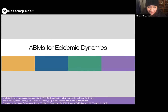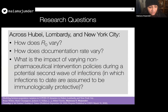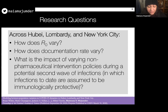Let's get started with ABMs for epidemic dynamics. The paper, recently published in the Proceedings of the National Academies of Science, aimed to answer three big-picture questions through our agent-based modeling approach across three different populations of interest: Hubei, China, where the pandemic began; Lombardy, Italy, one of the hardest hit locations worldwide in the earliest days of the pandemic; and New York City, one of the hardest hit locations here in the U.S.